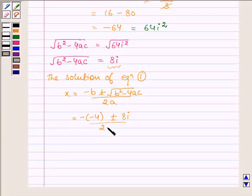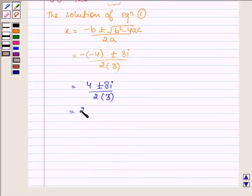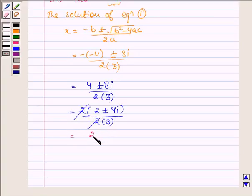Upon 2(3) we have 4 ± 8i / 6. Now taking 2 common from the numerator we have 2(2 ± 4i) / 6. Cancelling the common factors we have 2 ± 4i / 3.